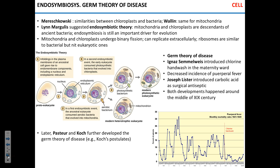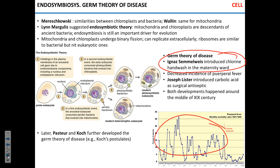Next we're going to chat about the germ theory of disease and then endosymbiosis. We already know about microbes since the middle of the 19th century, but so far we didn't have convincing evidence that there is such a thing as infectious disease. Semmelweis was the first person who linked transmission of microbes from the morgue to patients in the maternity ward. You can see that graph — the frequency of puerperal fever before chlorine wash, and then after. It dropped dramatically.